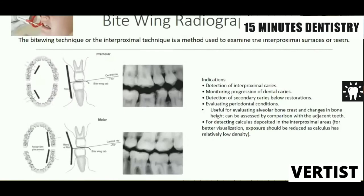Bitewing radiography is used to detect interproximal caries, monitor progression of proximal caries, detect secondary caries, and evaluate periodontal conditions. It is mostly used in the posterior region — the premolars and molar area. You have a film with a bitewing tab, or you use a bitewing film holder. The patient bites on the tab and the central ray is directed at plus 10 degrees. Anterior bitewing exposures are also taken but not very routinely.